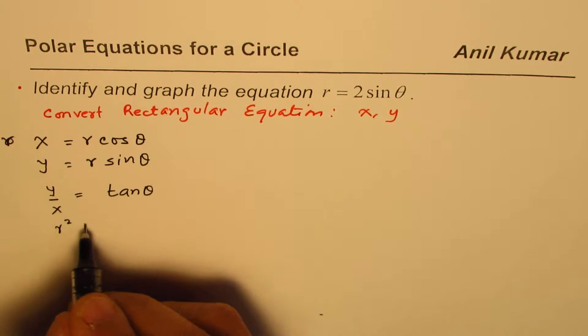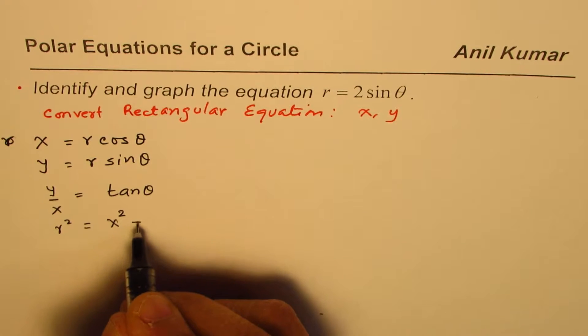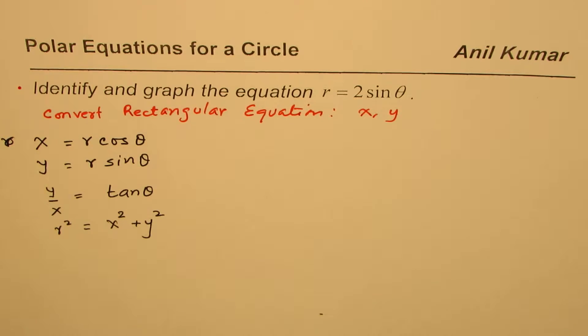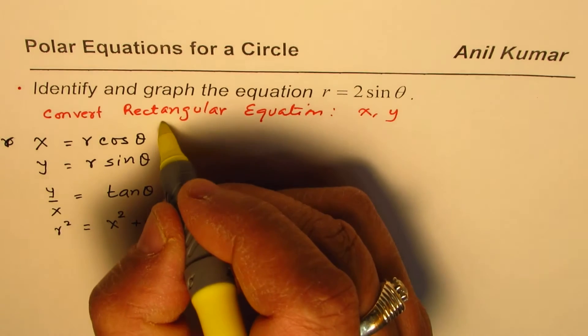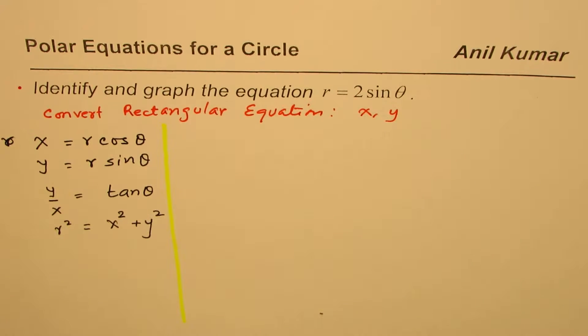And also r square equals x square plus y square. These are the things which help you convert polar equations to rectangular form. You may sometimes need some more trigonometric identities, but for this example this will be enough.